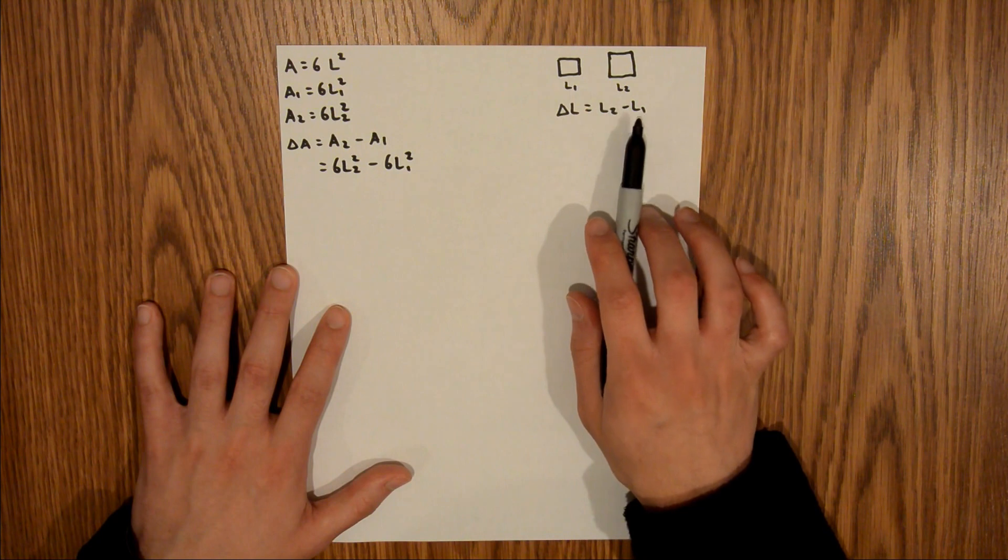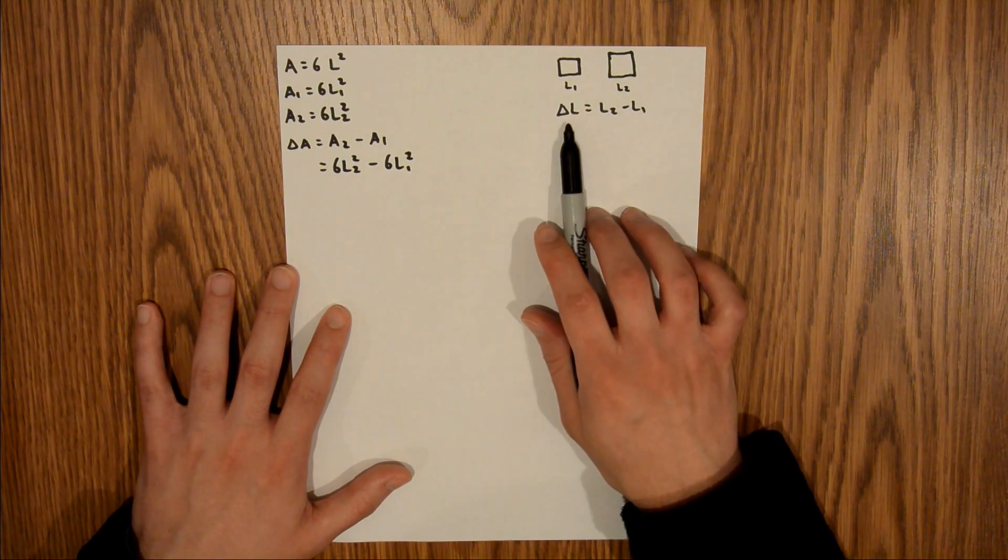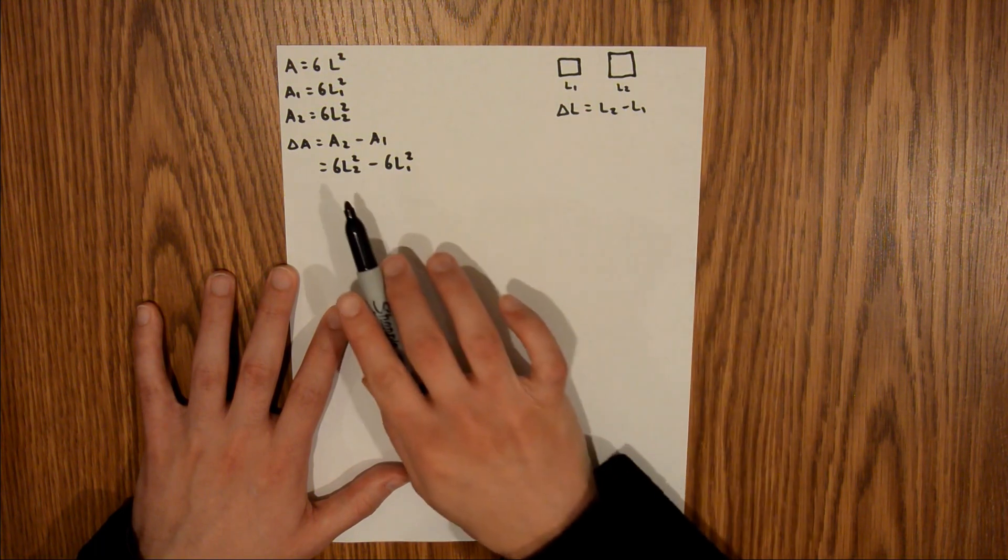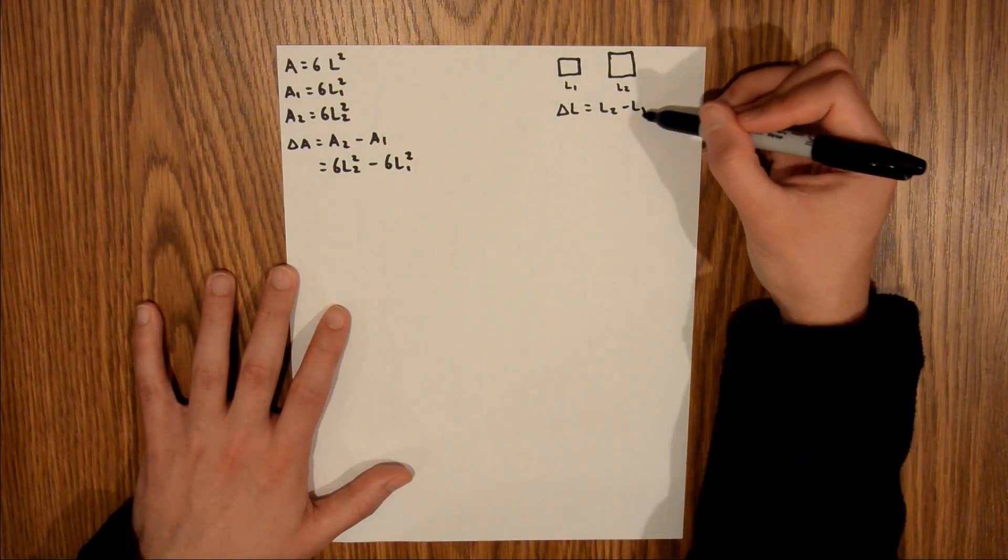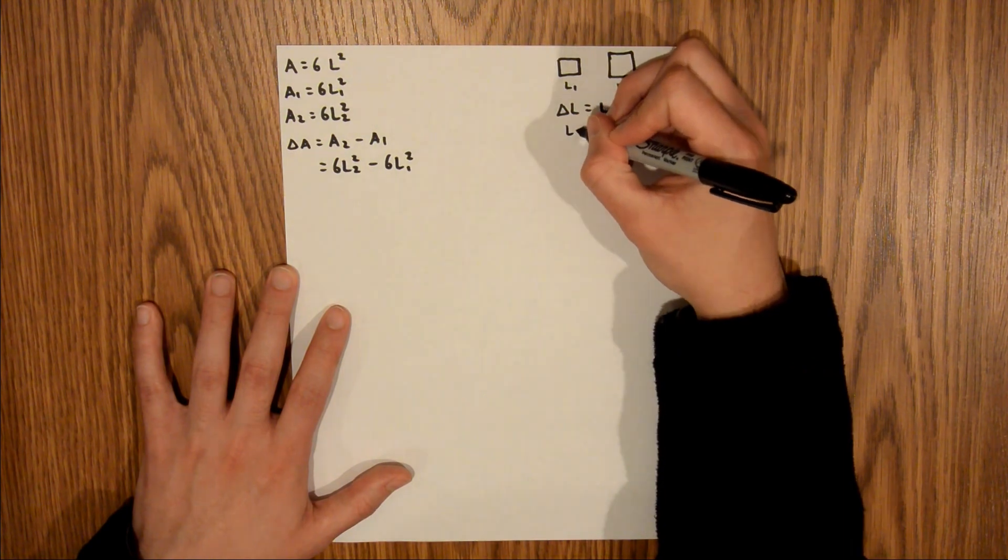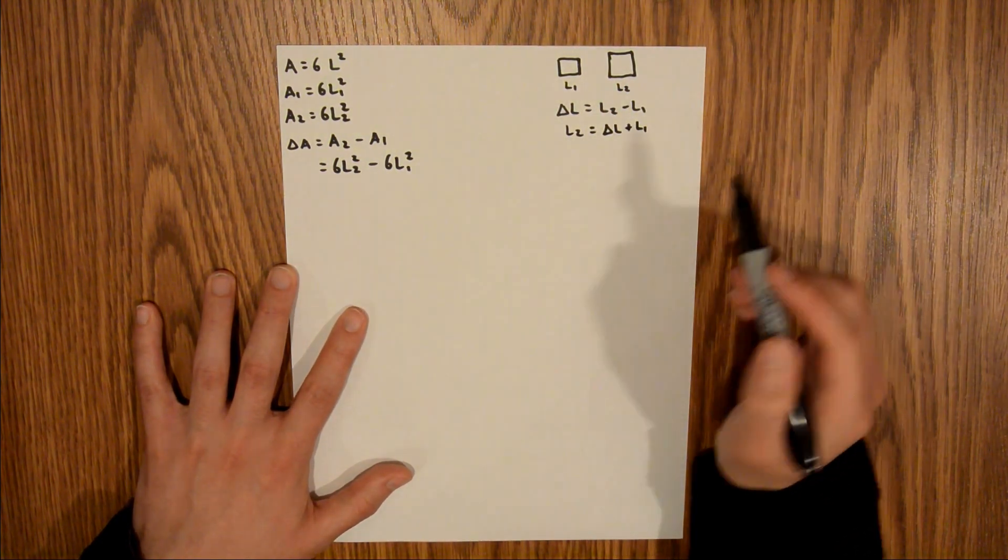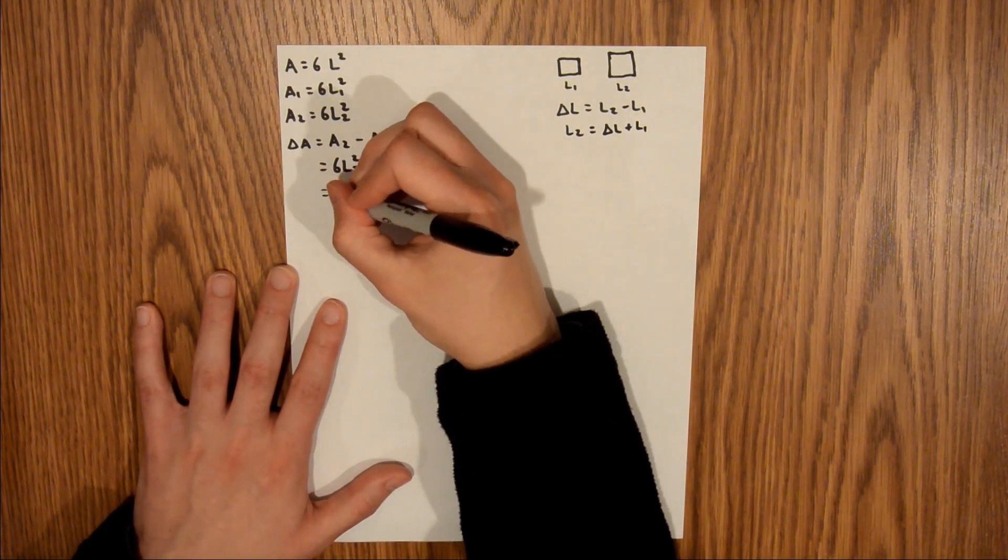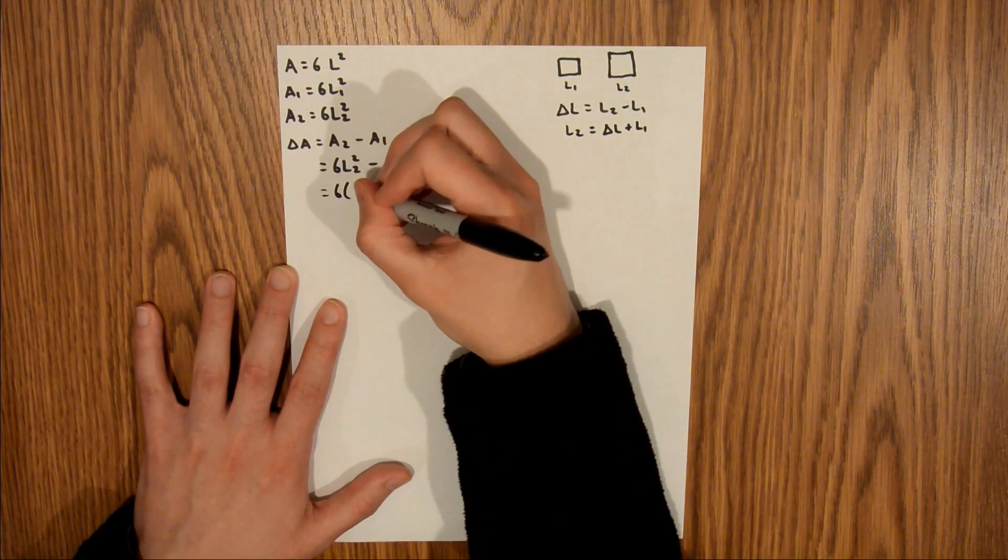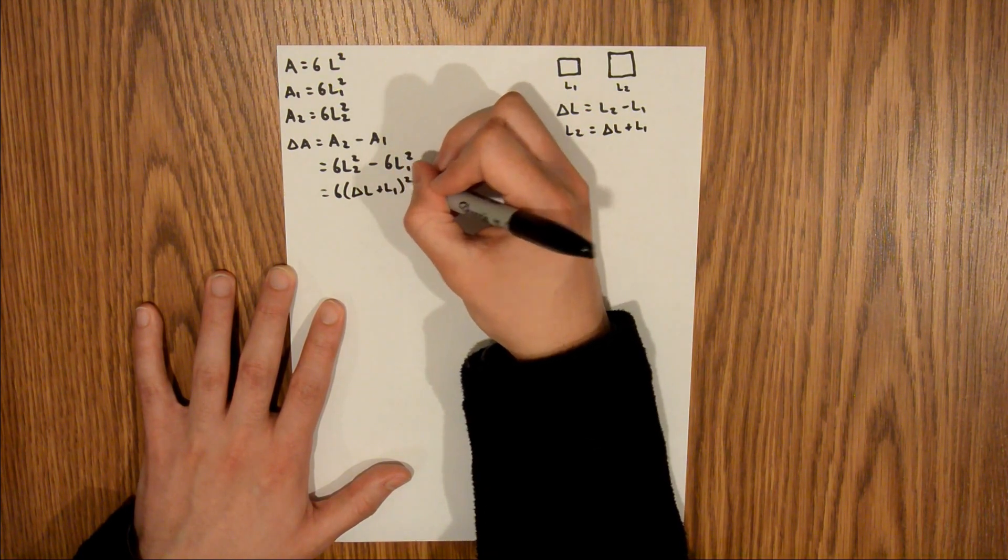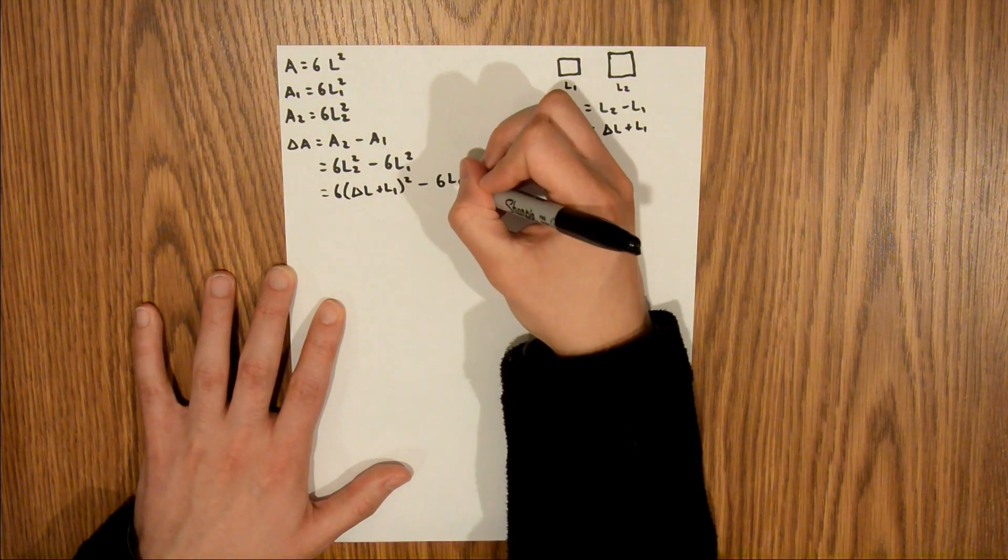Now over here, I wrote down this little equation. And again, we know L1 and delta L we can find via a linear expansion equation. So we can rearrange this for L2 and plug it into here. So I'm going to add L1 to both sides. And that's going to give me L2 is equal to delta L plus L1. And now I'm going to take that and plug it into here. And so that's going to give me six times delta L plus L1, entire quantity squared, minus six L1 squared.